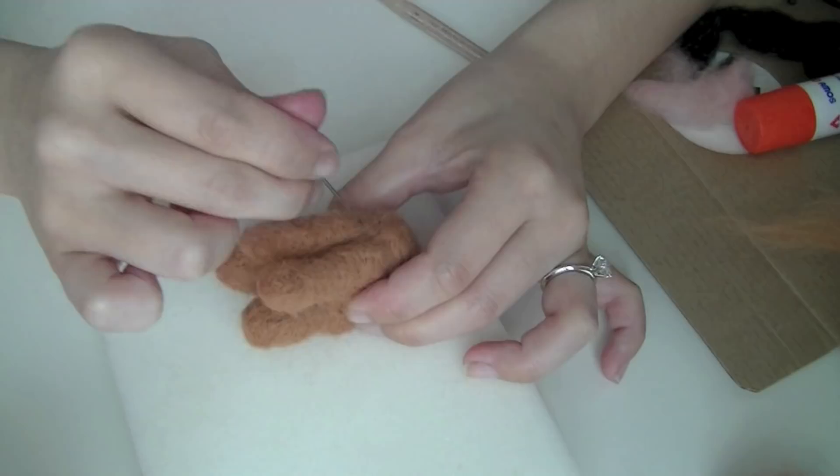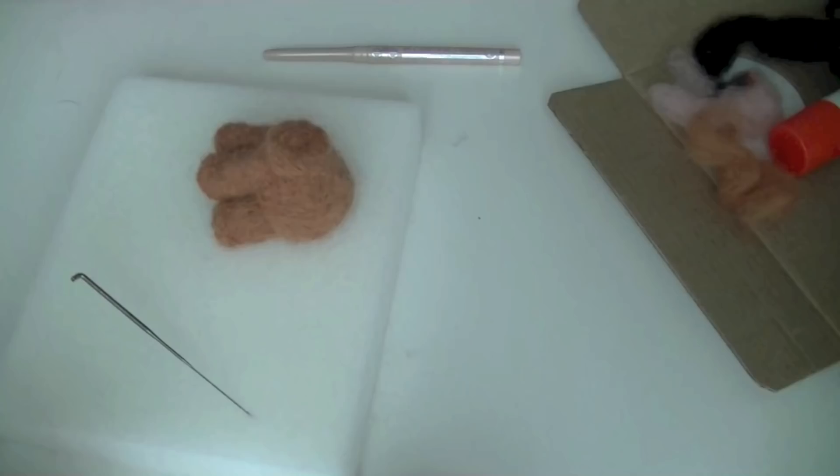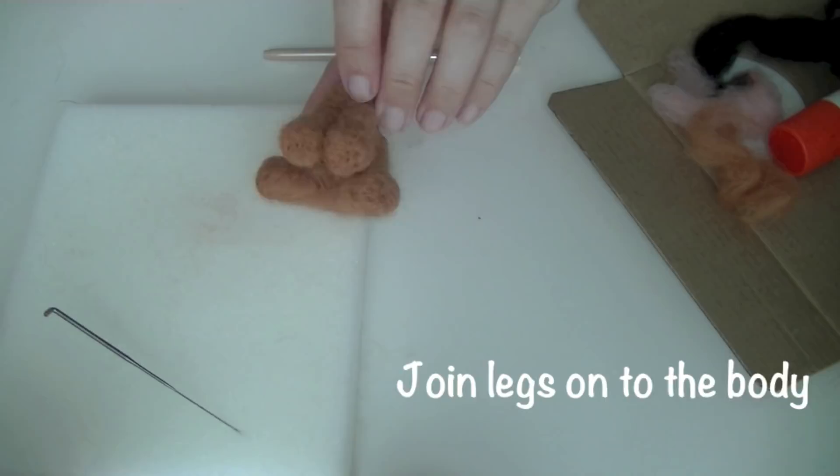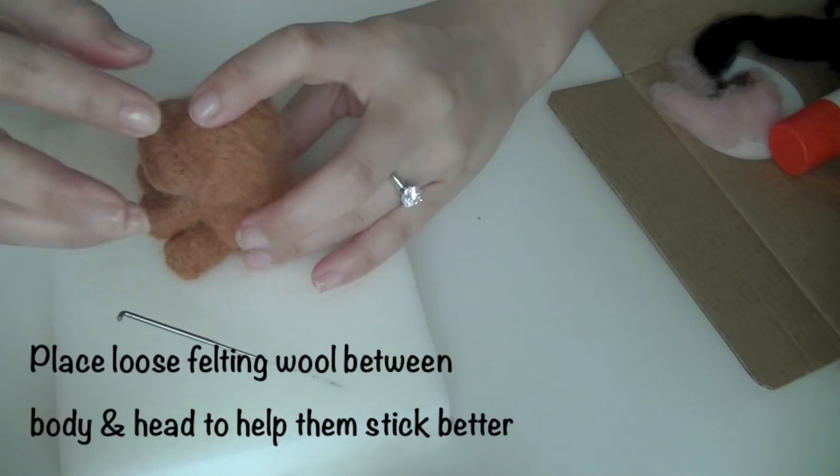So now I'm ready to attach the head. Now I'm going to grab some loose felting wool first and I'm going to pop it on top and this is going to help the whole thing stick. Position where you want the head to be and again, start attaching everything by stabbing it.